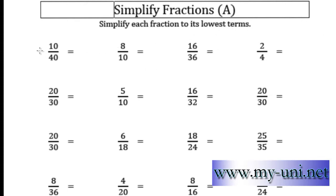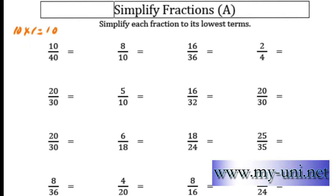All you have to do is find a number that has both the numerator and the denominator as a multiple of it. So in this case, both 10 and 40 are multiples of 10. 10 times 1 is 10 and 10 times 4 is 40. So both the numerator and denominator are multiples of 10, giving us 1 over 4 as the answer.